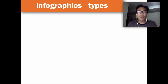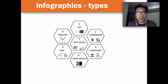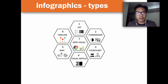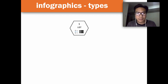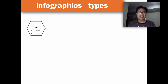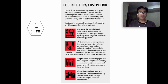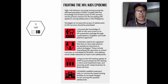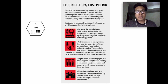Next, what are types of infographics? Essentially, there are seven commonly used types of infographics. Let's start with the list type. In this type, you simply list all the information of your messages in your infographics. Let's look at this example.